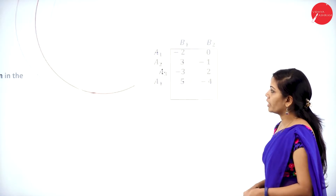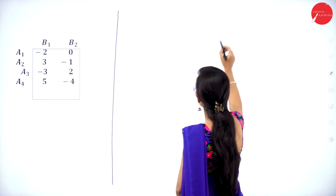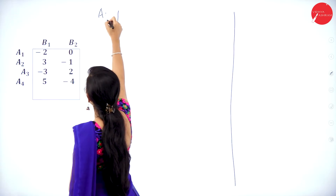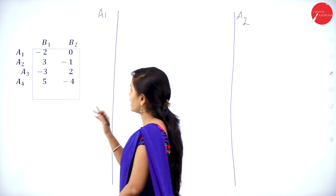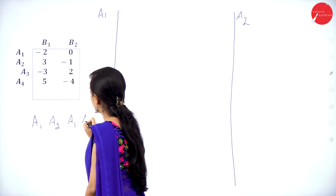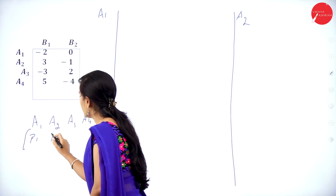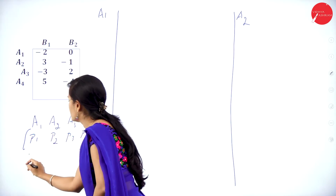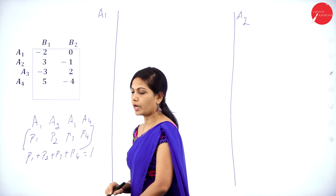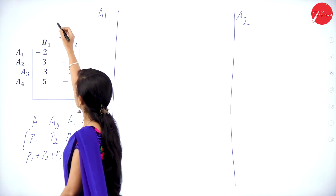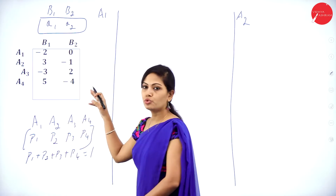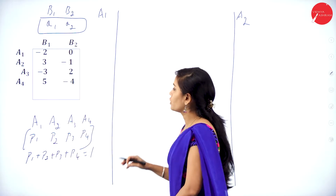Now I will draw a graph with two vertical lines — label the axes B1 and B2. Before that, write the probabilities for A1, A2, A3, A4 as P1, P2, P3, and P4, where P1 + P2 + P3 + P4 = 1. For B1 and B2, the probabilities are Q1 and Q2 respectively. We have 2 columns and 4 rows.